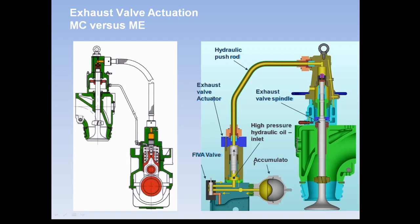In the cam operated exhaust valve, as you can see on my left side, this is the high pressure pipe, this is the hydraulic actuator, this is the ruler, and this is the cam. As the engine is turned, this is the base of the cam and this is the peak of the cam.